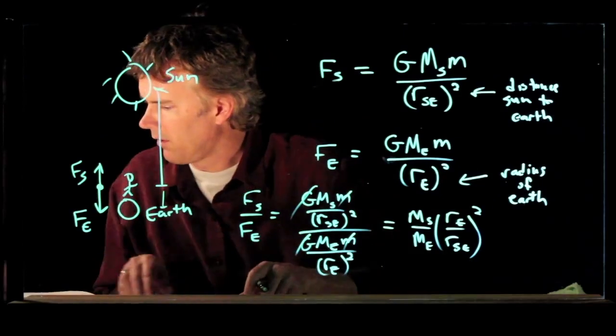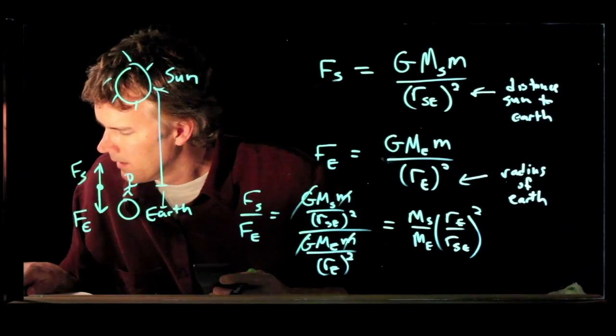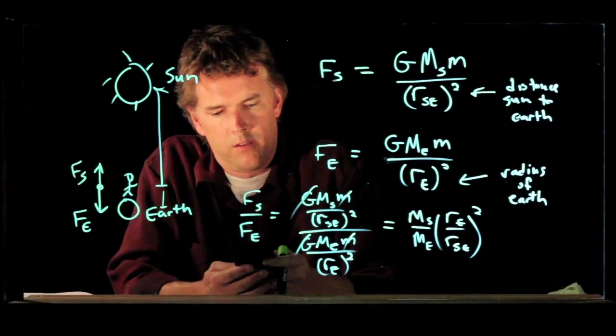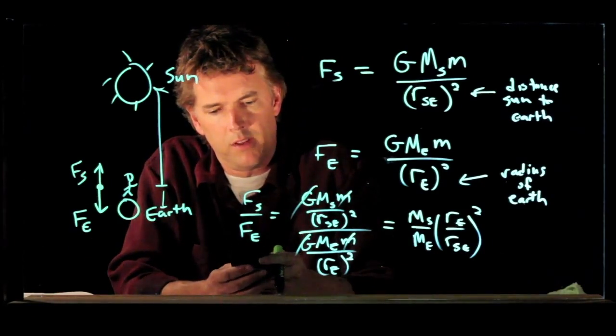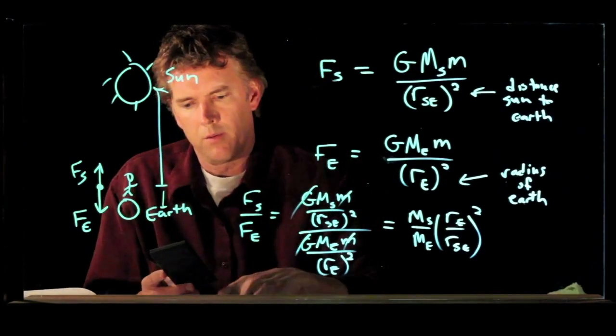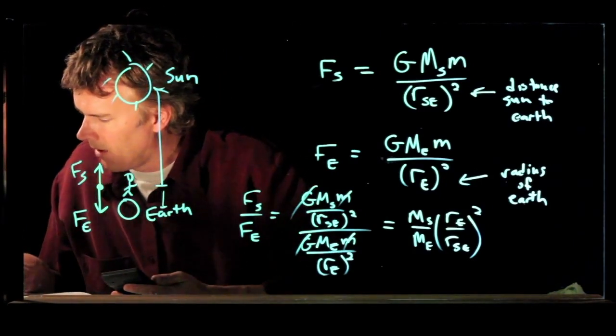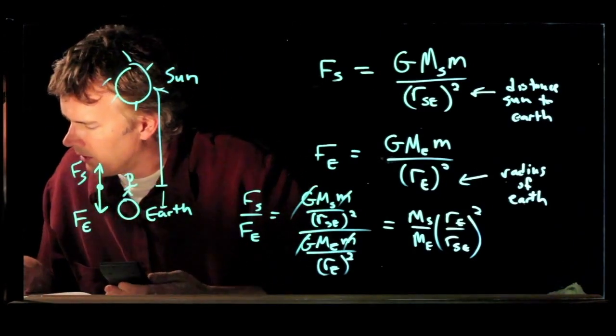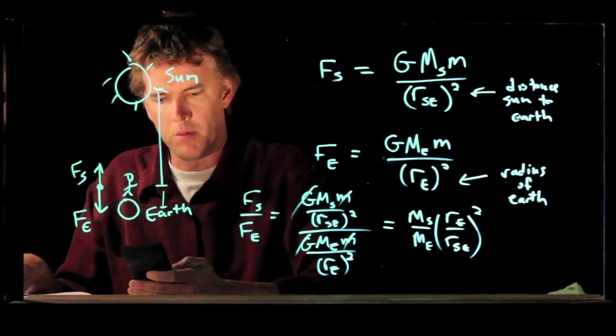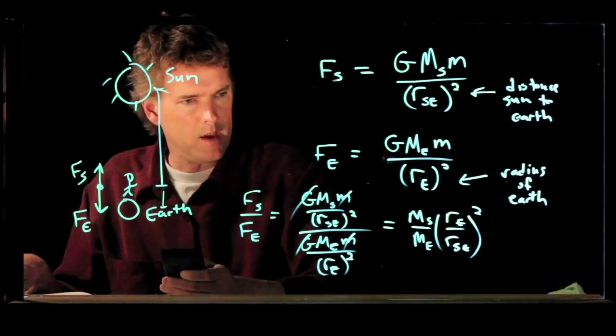Okay, so the radius of the earth is 6.37 times 10 to the 6 meters. We are going to divide that by the distance from the sun to the earth, which is 1.5 times 10 to the 11 meters. Okay, and now we square that.